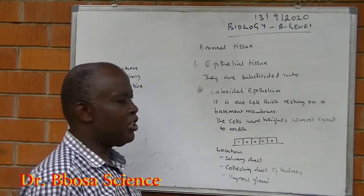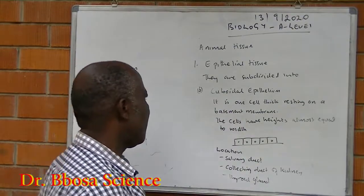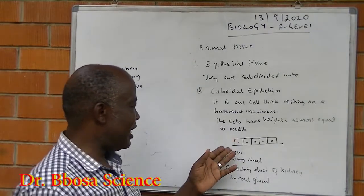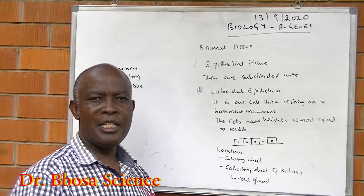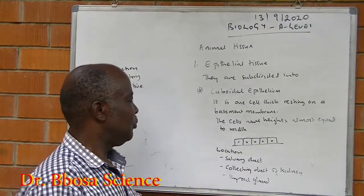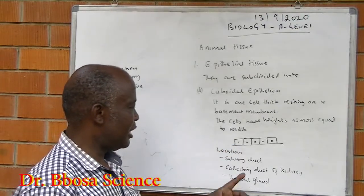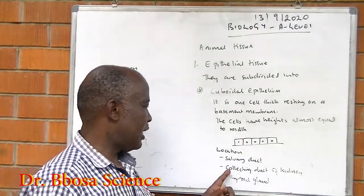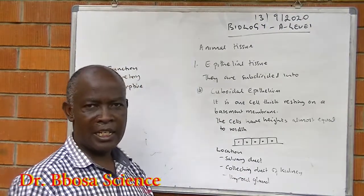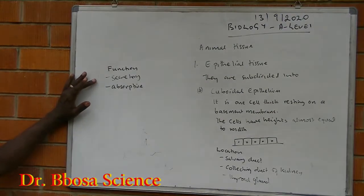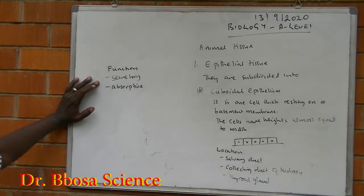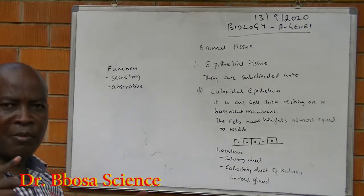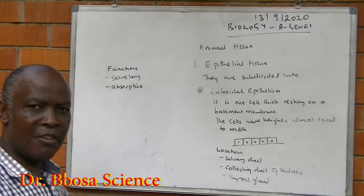Another example of epithelial tissue is cuboidal epithelium. Cuboidal epithelium is one cell thick. The cell height and width are approximately the same. This is the basement membrane. They are located in the salivary duct, collecting duct of the kidney, and thyroid gland. Their function is to secrete substances or to absorb. Absorptive cuboidal epithelium has microvilli to increase surface area for absorption.